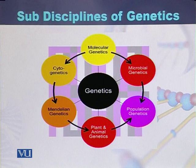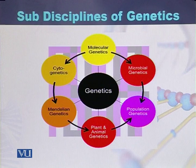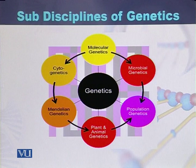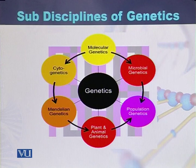Plant and animal genetics: if we study the genetics of plants or the genetics of animals, this subcategory is called plant and animal genetics. Population genetics: if we study the genetics of a specific population or people present in a particular area, this is called population genetics. And if we study the genetics of microbes like bacteria or viruses, this category is called microbial genetics.